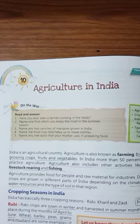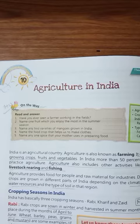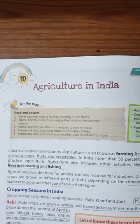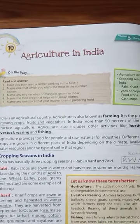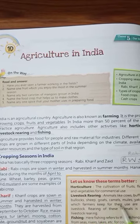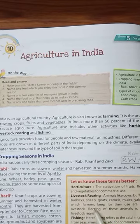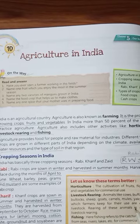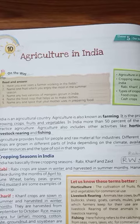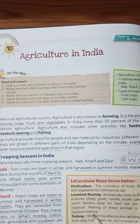Agriculture also includes other activities like horticulture, livestock rearing and fishing. What is horticulture? Horticulture is the culture of fruits, flowers and vegetables for commercial use. Livestock rearing — animals like cows, buffaloes, bullocks, sheep, goats, camels, mules, yaks, etc., which farmers keep for their use are called livestock. Rearing of these animals is called livestock rearing.